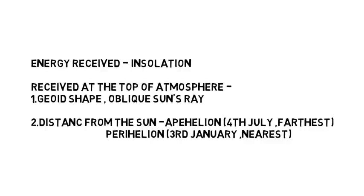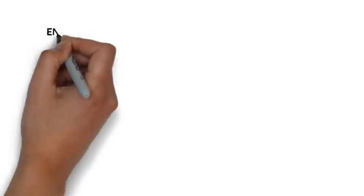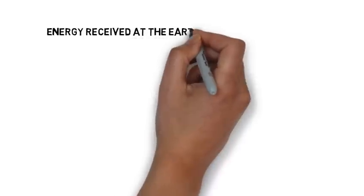The second factor is the distance from the sun. We know that earth revolves around the sun in an elliptical orbit, which means that at one point earth is farthest from the sun and at one point earth is nearest to the sun. On 4th of July, earth is farthest from the sun and it is called aphelion, while on 3rd of January, earth is nearest to the sun and it is called perihelion. However, other factors like the distribution of land and sea and atmospheric circulation mask the effect of these factors.